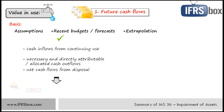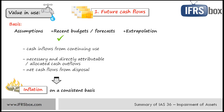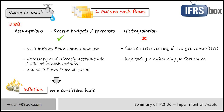Regarding inflation: you can project cash flows in nominal terms — that is including inflation — or in real terms — that is in current prices excluding inflation. Either way is fine as long as you are consistent in determining your discount rate. What cannot be included in future cash flows: any cash flows expected to arise from future restructuring to which an entity is not yet committed; any future cash outflows that will improve or enhance the asset's performance nor the related cash inflows; however, future cash outflows necessary to maintain the asset's current conditions are included. To avoid double counting, estimates of future cash flows should include neither inflows related to financial assets such as receivables, nor outflows related to liabilities such as payables, provisions or pensions.